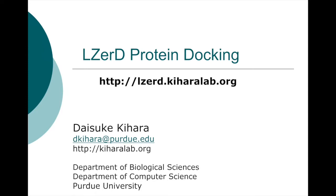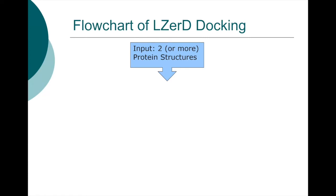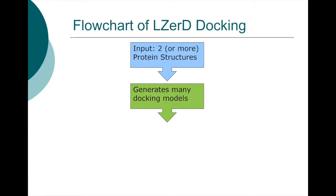LIZARD is protein-protein docking software where you input two protein structures as PDB files. The algorithm generates lots of different docking conformations, sampling every possible docking interface and angles, as long as the interactions seem feasible. This step typically generates around 100,000 structures.